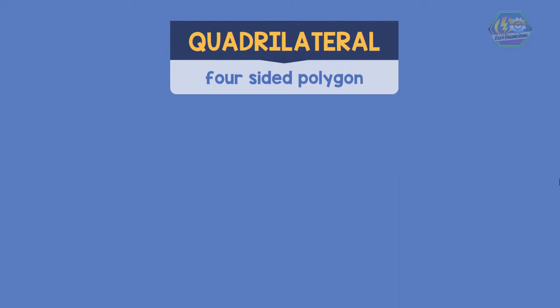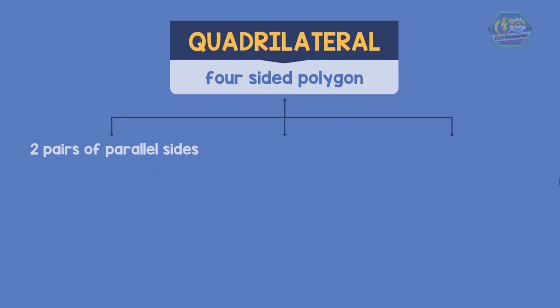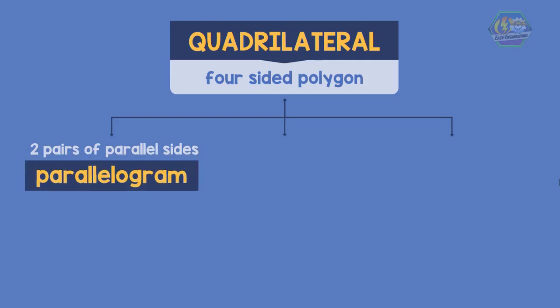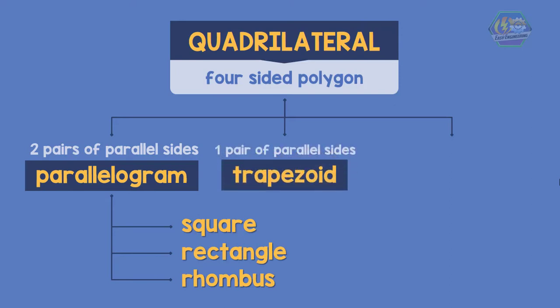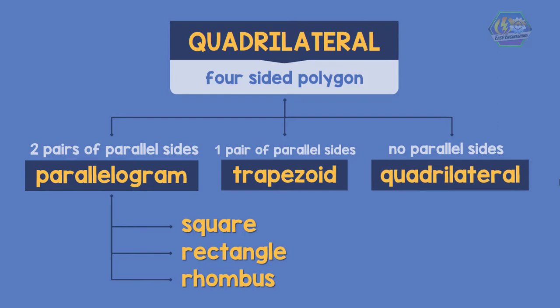So to summarize: a quadrilateral is a four-sided polygon. If it has two pairs of parallel sides, then it is called a parallelogram — and square, rectangle, and rhombus are types of parallelogram. If it only has one pair of parallel sides, we call it a trapezoid or trapezium. And if there are no parallel sides, then we just call it a quadrilateral.